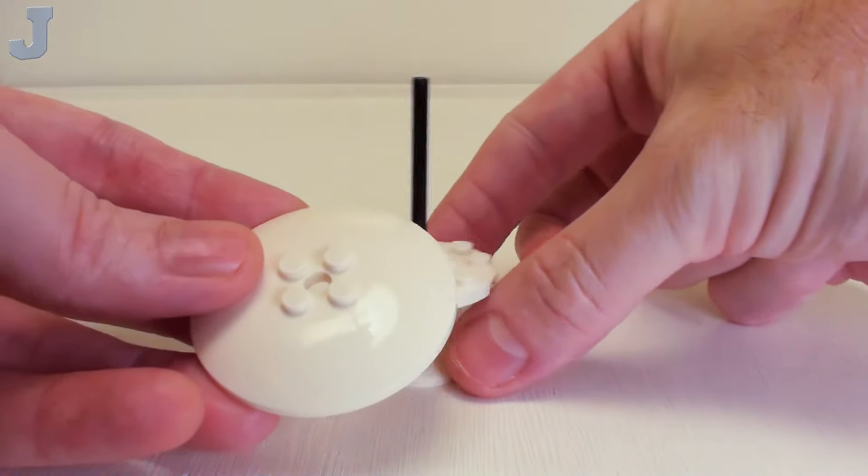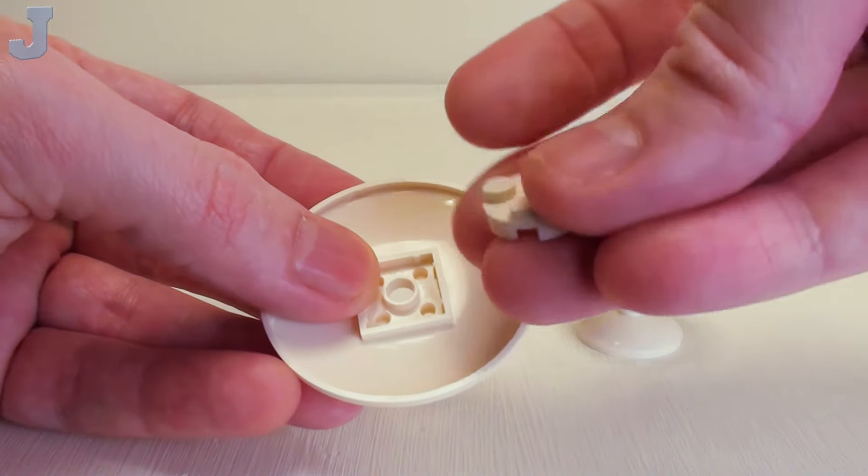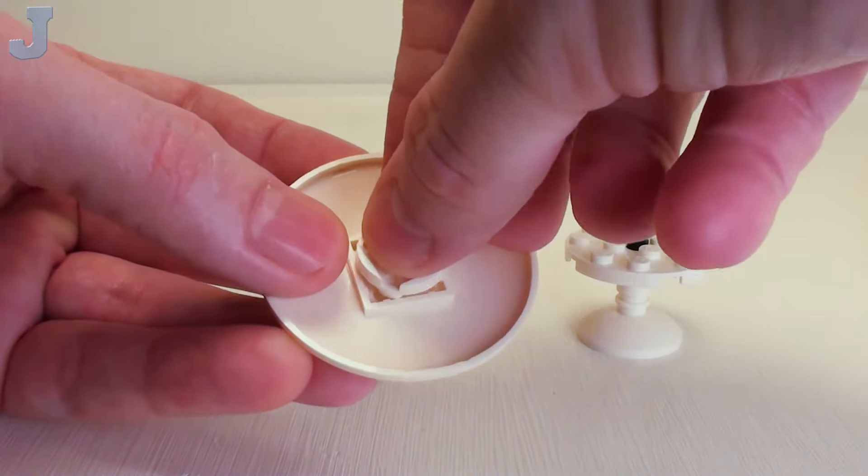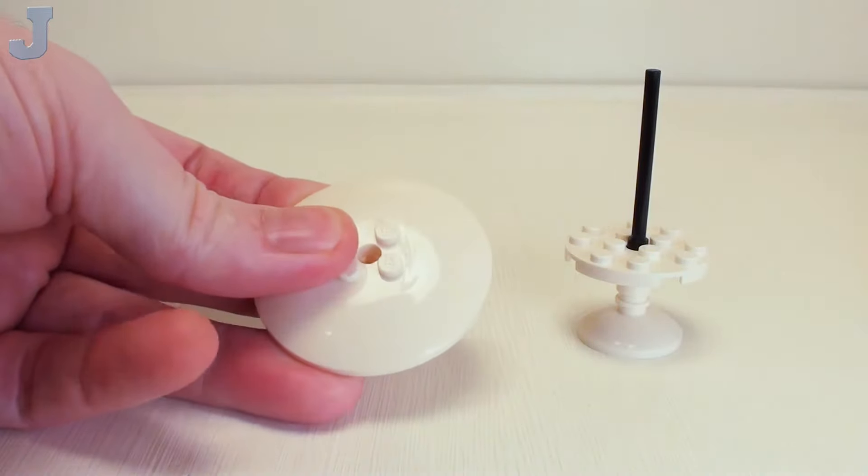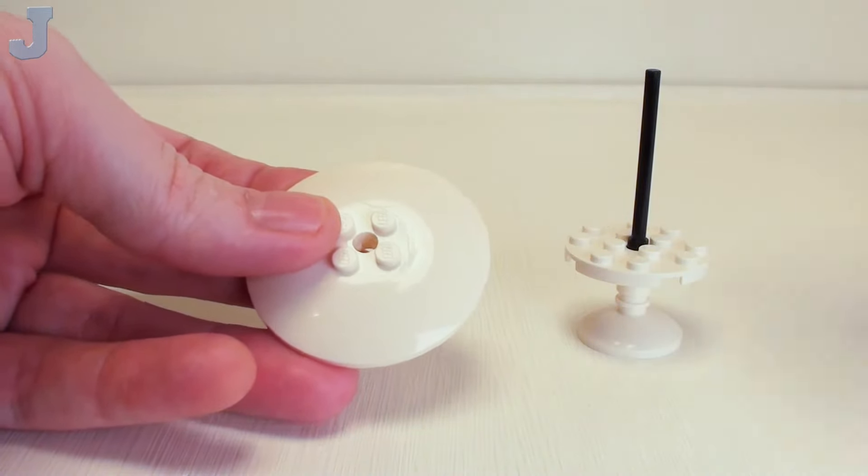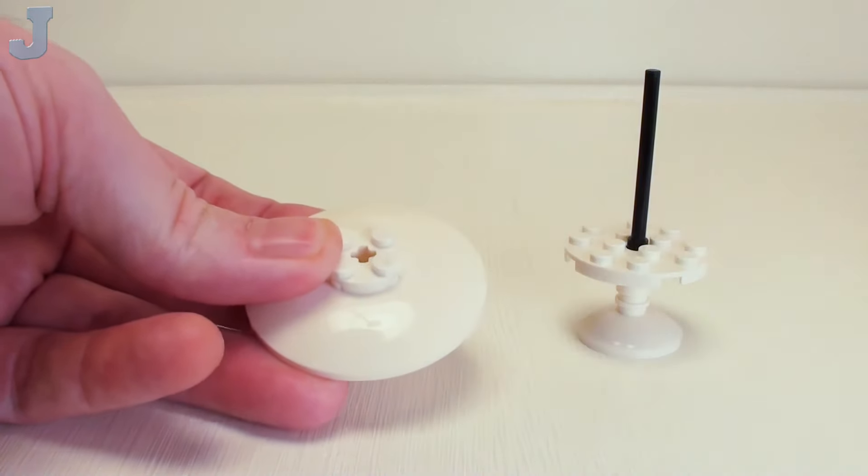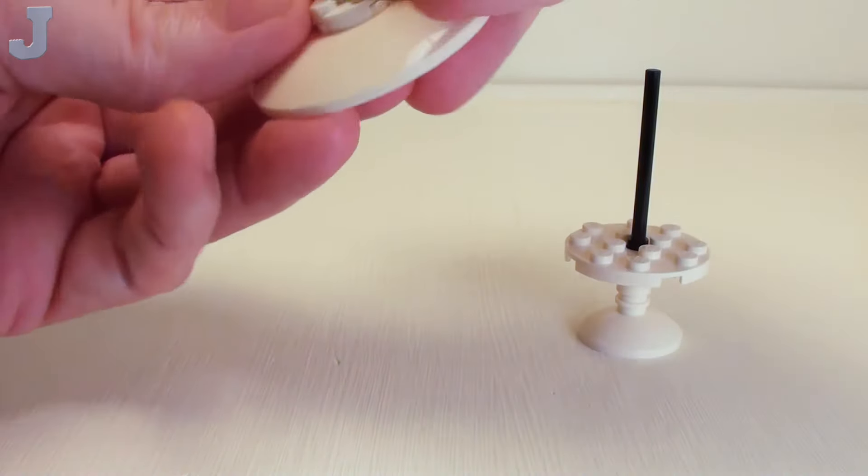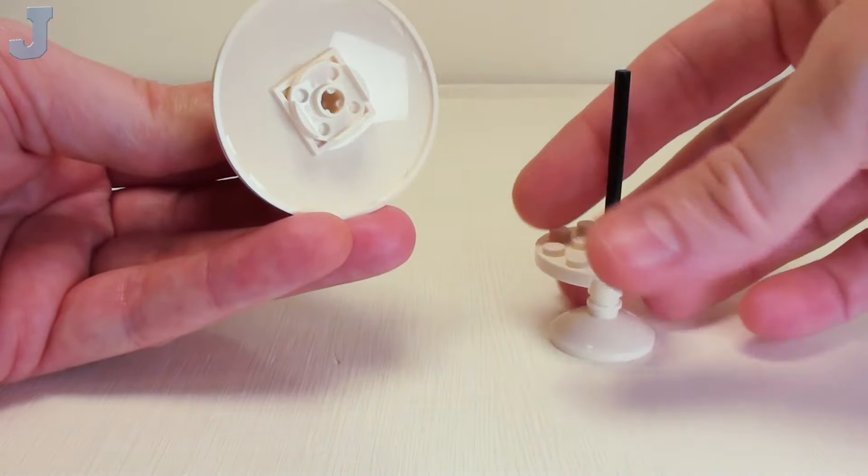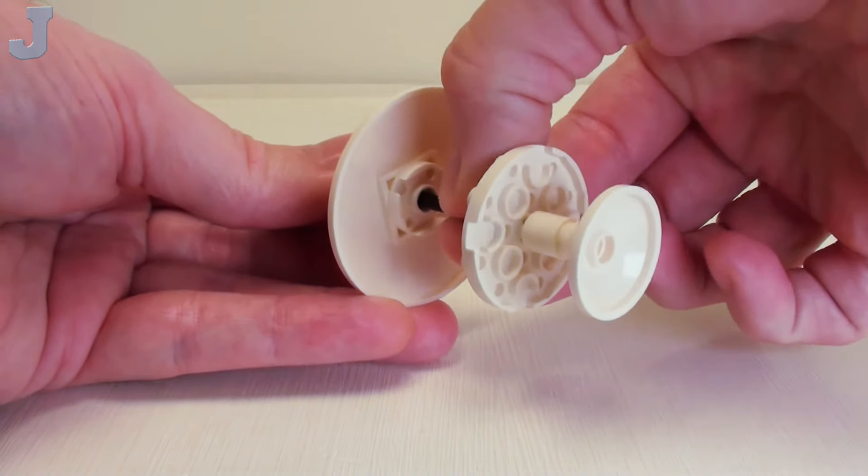Then for an umbrella, let's take a 6 by 6 parabola dish. I'm going to flip this over. Take a 2 by 2 round plate with cross hole. Place it right there. Flip the unit back over, and we're going to set down a 2 by 2 plate with cross hole there, and we're going to set a 1 by 1 nose cone right on top. Now I'm going to simply slip the shaft inside the 2 by 2 round bricks.